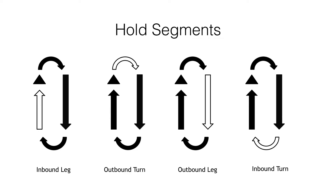Let's talk about the holding pattern and its segments. On the chart, the triangle is the holding fix — the one firm point in the holding pattern that we return to in every rotation, designated by ATC or a chart. We have two turns and two straight segments. Turning away from the holding fix after crossing it is the outbound turn; flying straight away is the outbound leg. Turning back toward the fix is the inbound turn, followed by the inbound leg, which always ends at the holding fix.